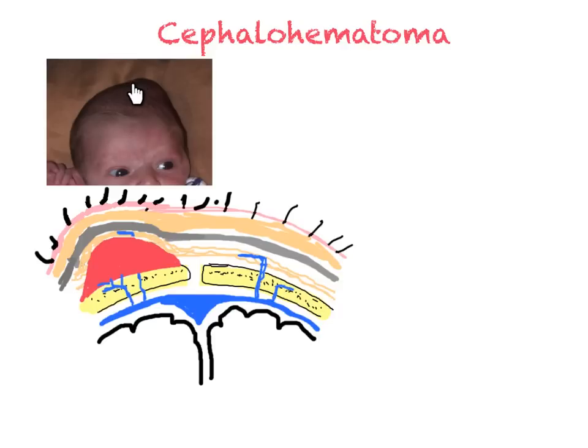Note the cephalohematoma in this baby — very clearly demarcated and not crossing the suture line. Just like in caput succidaneum, a cephalohematoma also occurs because of a prolonged second stage of labor or vacuum extraction, causing significant pressure and traction over the periosteum, leading to disruption of the diploic blood vessels and development of the hematoma.